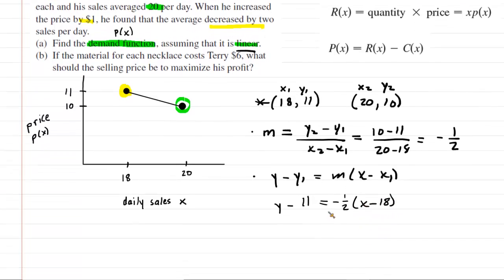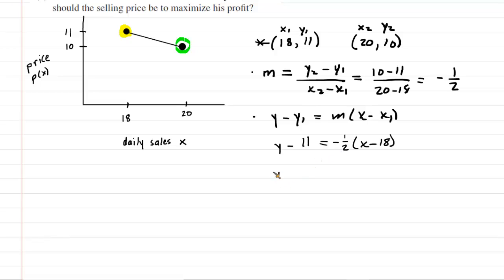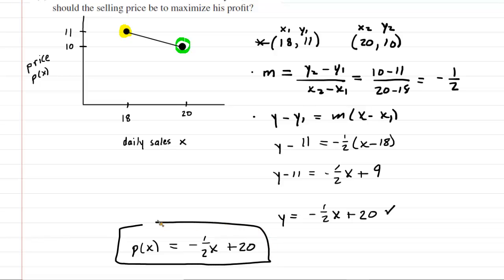And then what we need to do is simplify this equation. Why don't we distribute the negative 1 half on the right hand side. This will give us negative 1 half x plus 9. And then we'll add 11 to both sides. And we end up with y is equal to negative 1 half x plus 20. So this actually turns out to be the equation of that line up here. Therefore, it's the equation of our demand function. So we can write as the final answer that p of x is equal to negative 1 half x plus 20. This would be the correct answer to part A of the question.